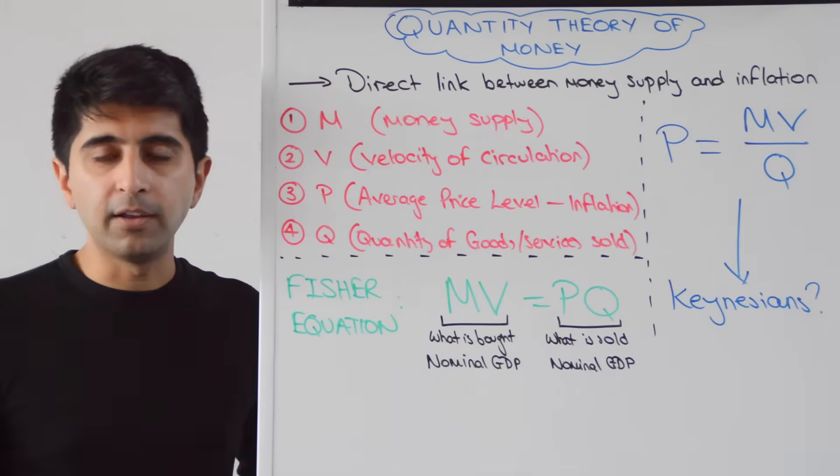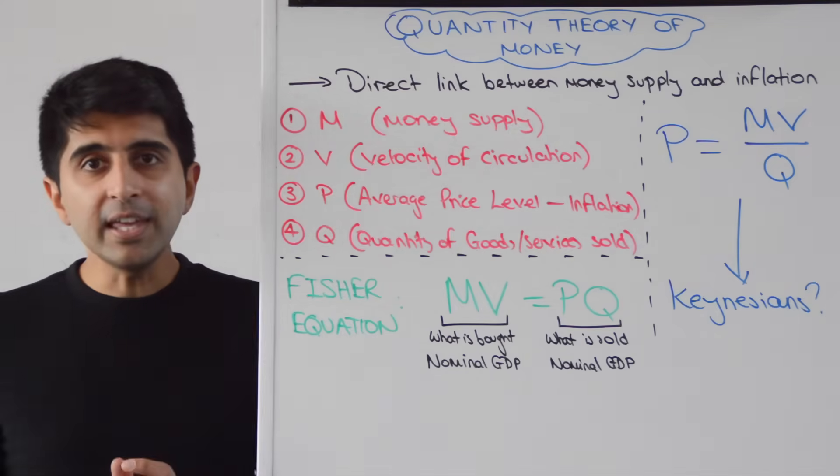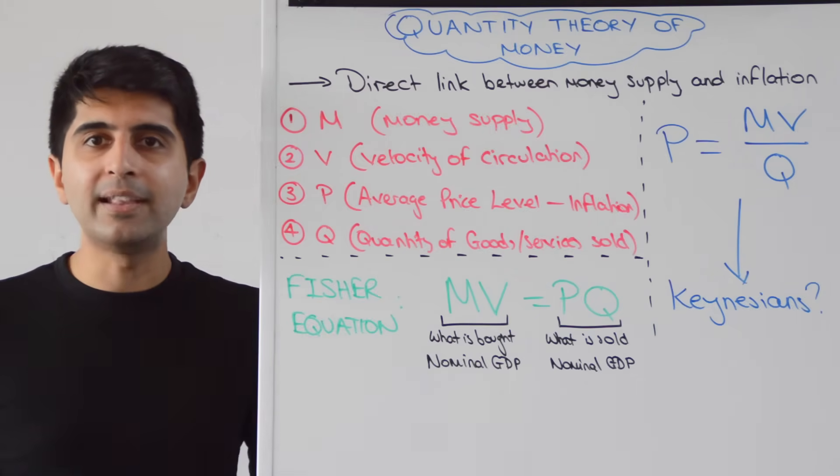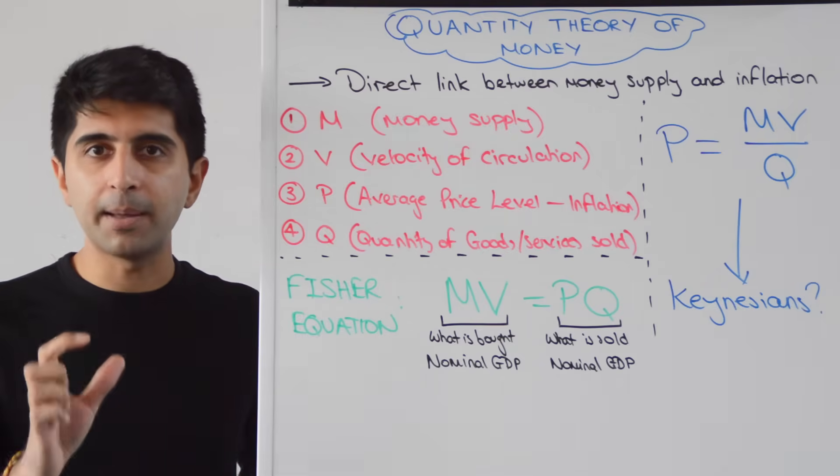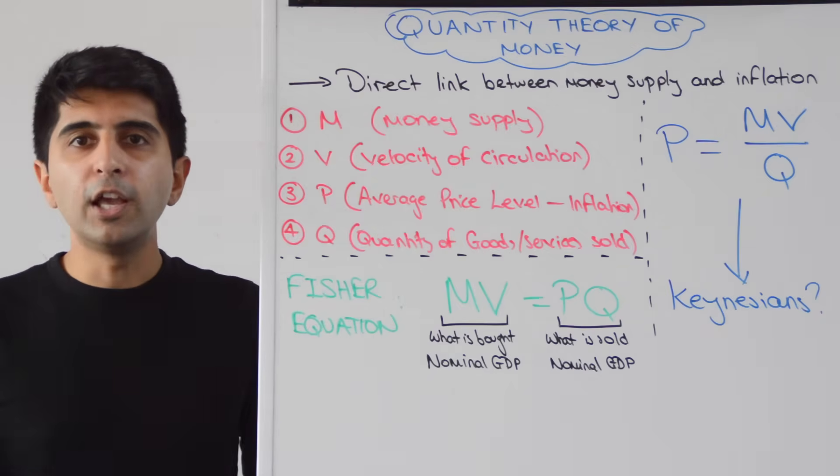M is the money supply, okay? So for example, M4, as we learned in my previous video. V is the velocity of circulation. That is the number of times that money changes hands in the economy. Think of it as the number of transactions that take place with a given amount of money. So let's take a £10 note. Let's say you've got a £10 note. You spend that £10.